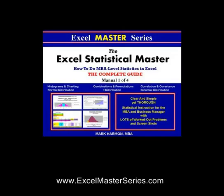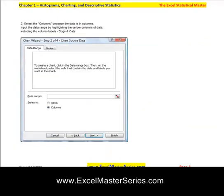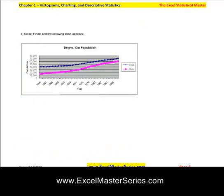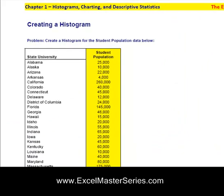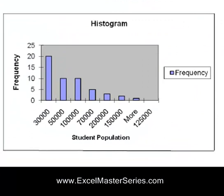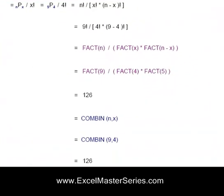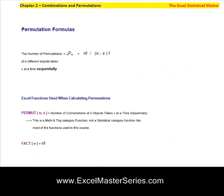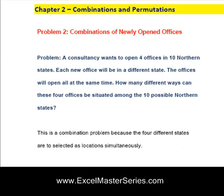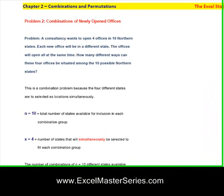Here's the first manual. It covers histograms, combinations, permutations, correlations, covariance, the normal distribution, t-distribution, and the binomial distribution. We make a chart from the data, walking you through step-by-step with lots of screenshots, and then make a histogram from that data. Here are combinations and permutations — this will save you a lot of time because there's a lot of manual calculation that goes into them. We walk through problem after problem, covering all different ways of looking at combinations and permutations.